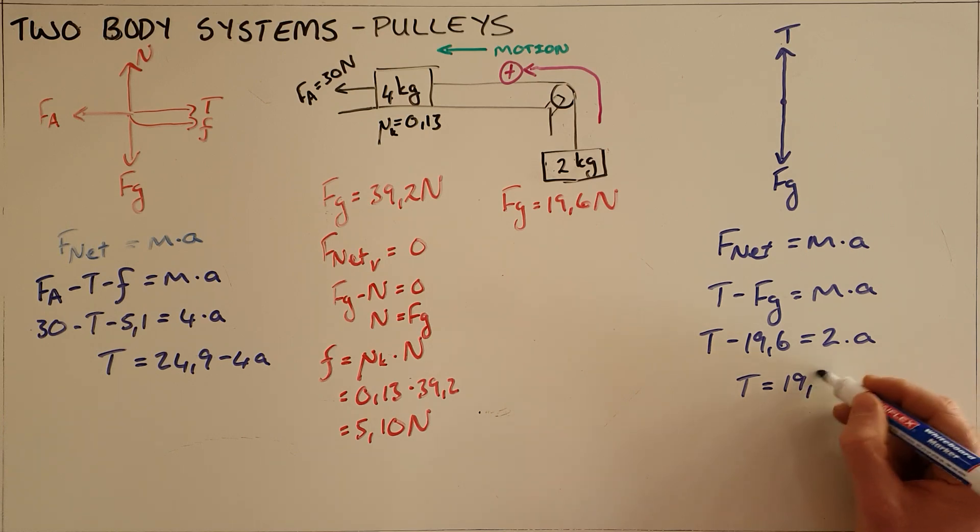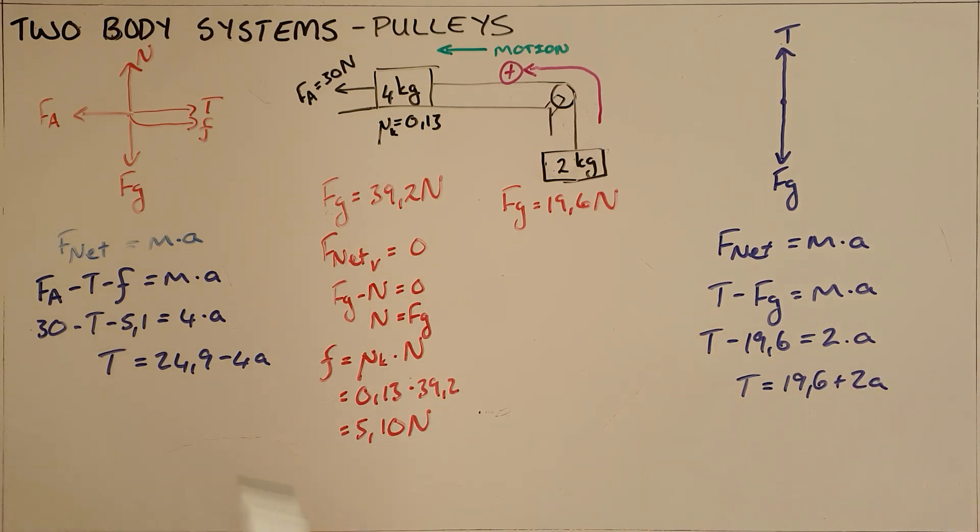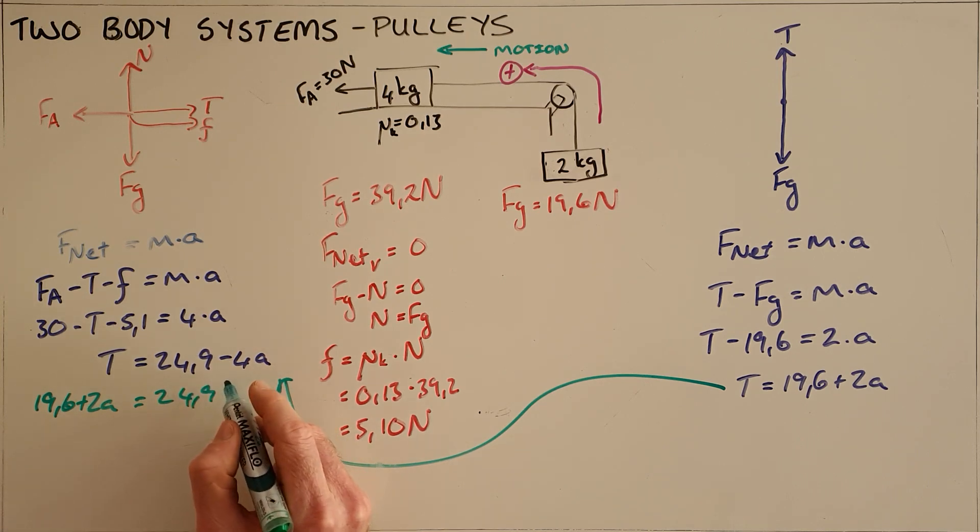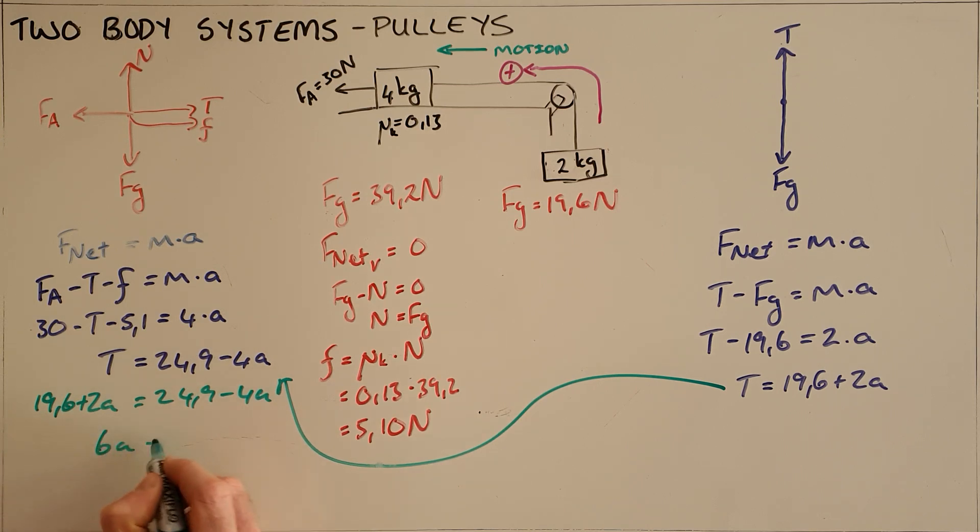We have two expressions and two unknowns, or two equations and two unknowns. We can substitute this equation in for tension in this equation, which gives us that 19.6 plus 2a, that expression for tension, is equal to our first equation expression for tension, 24.9 minus 4a. This allows us to write it as 6a is equal to 5.3, and therefore the acceleration of the system is 0.88 meters per second squared.